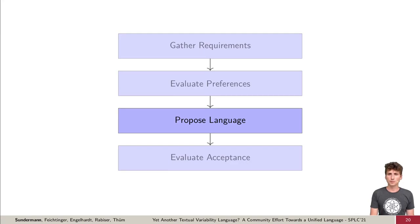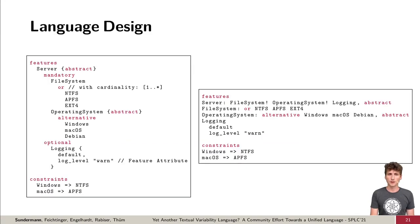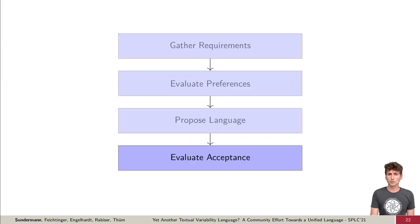After we analyzed the preferences of the community, we made our language proposal. Based on the insights, we proposed two different versions for further evaluation. The main difference here is the modeling of hierarchy. On the left side we see the hierarchy specified using nesting, on the right side using references. Then we took both variants to evaluate the acceptance of the community.